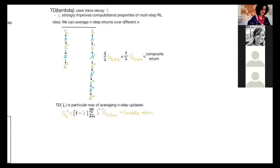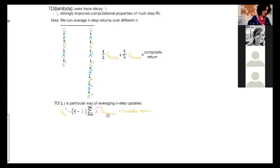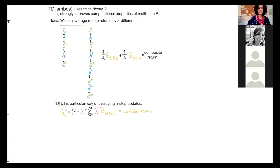And TD-Lambda is a particular way of averaging n-step returns, in which each return is weighted by lambda to the power of n-1, and then it's normalized by 1-lambda. So we basically take all the different n-step returns and weigh them by using the lambda parameter and normalize this weighted sum of the composite return. And lambda is between 0 and 1 for this.